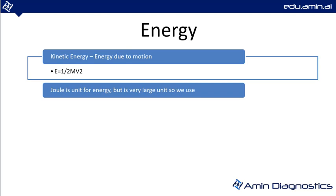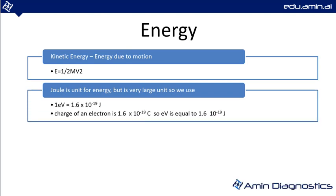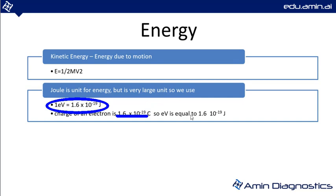When working with small nucleons and electrons, the joule is too large a unit. So we use another unit — the electron volt (eV). One electron volt equals 1.6 × 10⁻¹⁹ joules, which corresponds to the charge of the electron: 1.6 × 10⁻¹⁹ coulombs.